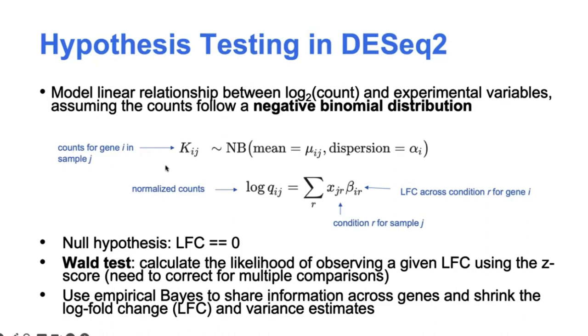And to test for statistical significance, typically the null hypothesis that we'll test is whether the log fold change is equal to zero. So DESeq2 uses the Wald test to do this. So they compute a Z statistic for the log fold change, which is just calculated as the LFC over the standard error. And then the Z statistic asymptotically should follow a standard normal distribution. So that's how the p-values get computed.